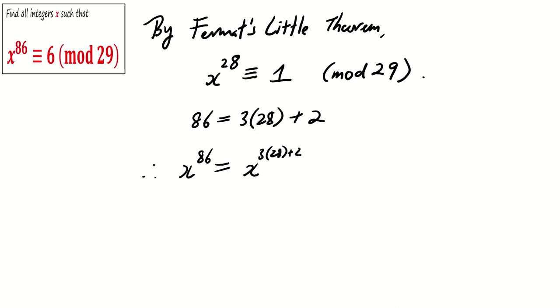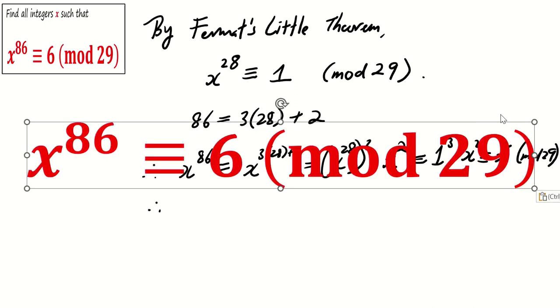This means that x^86 ≡ x^(3×28+2) (mod 29). Using indices property, this can be written as (x^28)^3 × x^2. Using Fermat's Little Theorem, this is congruent to 1^3 × x^2, which is congruent to x^2 (mod 29).